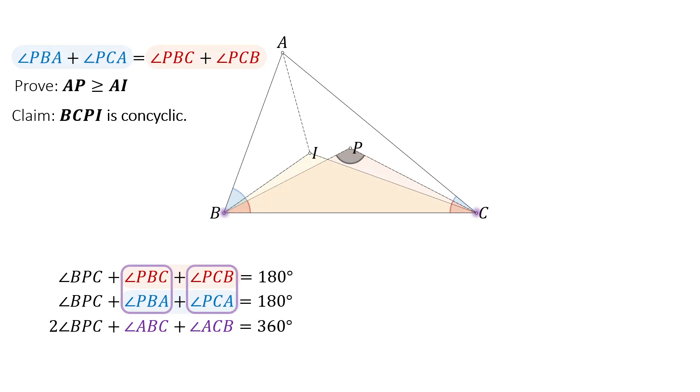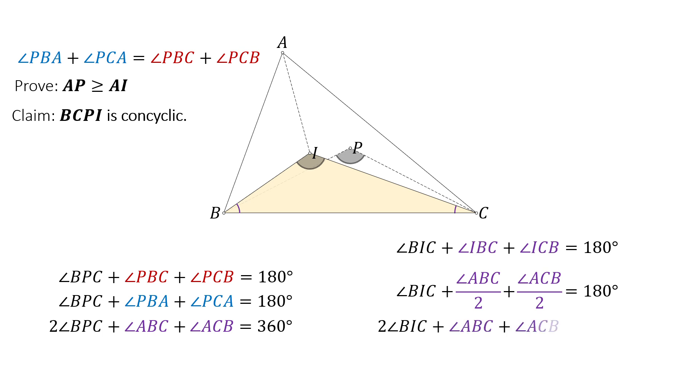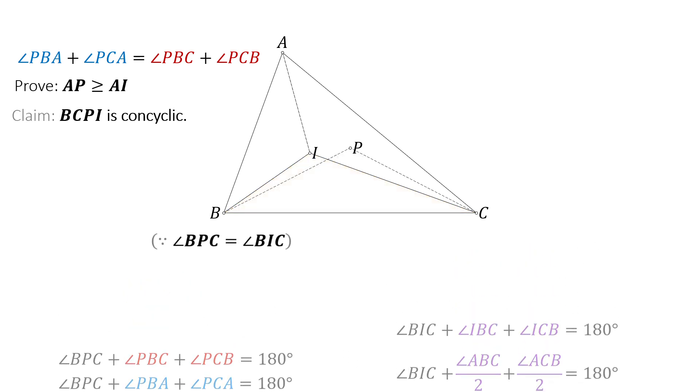Now let's observe triangle BIC. The sum of its interior angles is 180 degrees. Since BI and CI are angle bisectors, angle IBC is half of angle ABC and angle ICB is half of angle ACB. Multiplying both sides by two gives twice angle BIC plus angle ABC plus angle ACB equals 360 degrees. By comparing these two equations, we conclude that angle BPC equals angle BIC. This proves that BCPI is concyclic.